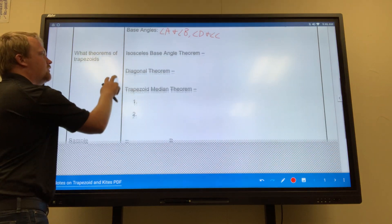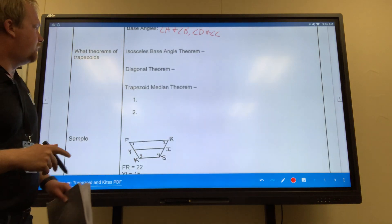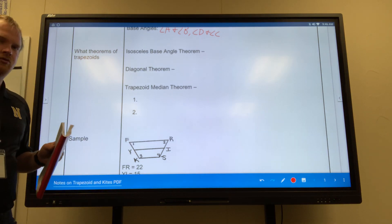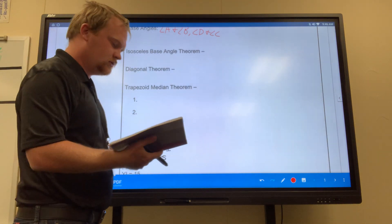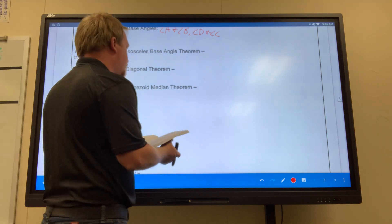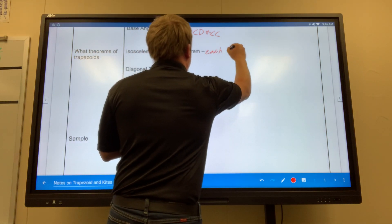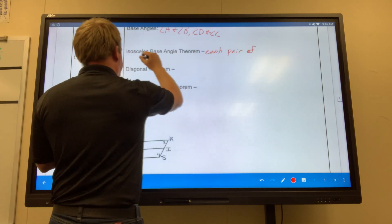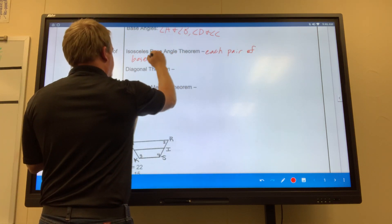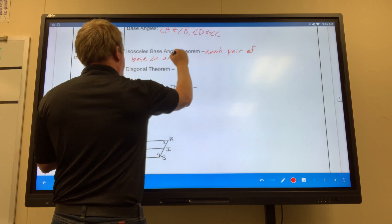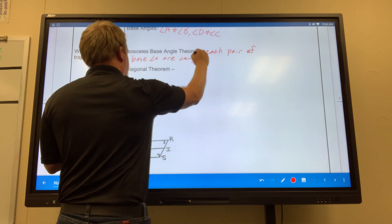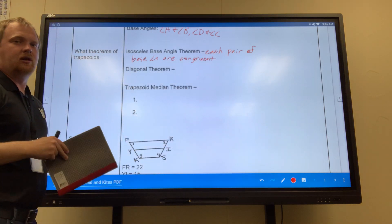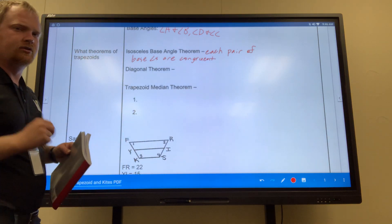Now, looking at a couple of theorems that we have, isosceles base angle theorem. So what is that exactly? Well, it basically states that each pair of base angles are congruent.